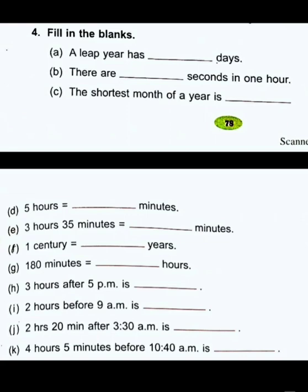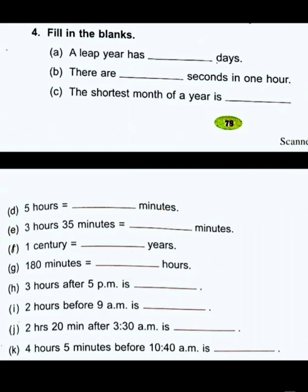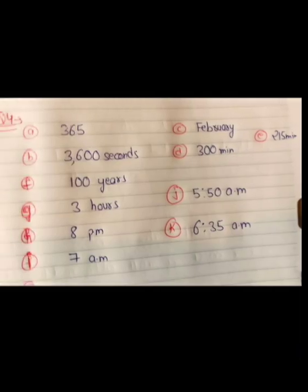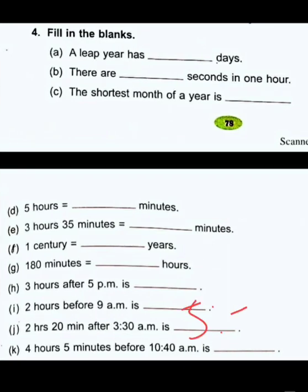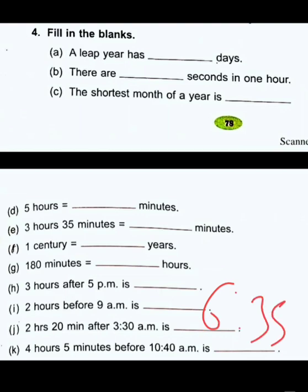Three hours after 5 PM is 8 PM. Two hours before 9 AM is 7 AM. Two hours 20 minutes after 3:30 AM is 5:50 AM. Four hours 5 minutes before 10:40 PM gives 6:35 PM.